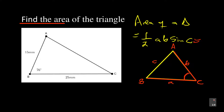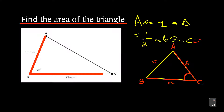The question says: find the area of the triangle. Looking at this diagram, triangle ABC has AB equal to 15 millimeters, BC equal to 25 millimeters, and angle B equal to 76 degrees. To calculate the area, you take the two lines — line AB and line BC — and the angle they form becomes the angle you use. Find two lines, and the angle they form is the one to use.